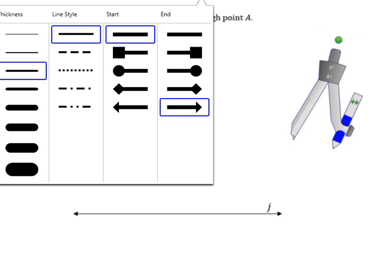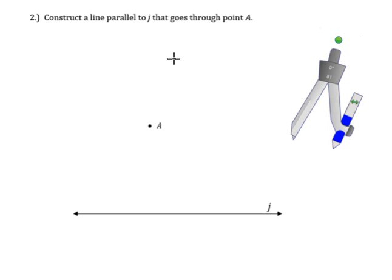In order to do that, you're going to use your straightedge. Let's see if this works here. Use your straightedge and make sure it goes through point A and intersects line J, like that.